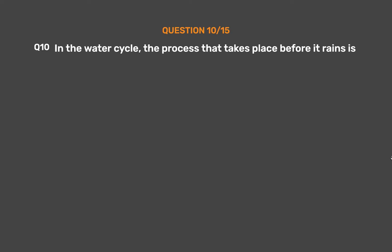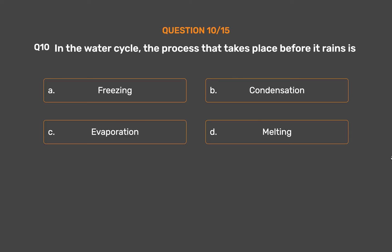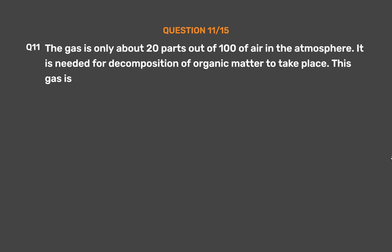Question number ten: In the water cycle, the process that takes place before it rains is — option A: freezing, option B: condensation, option C: evaporation, option D: melting. The correct answer is option B: condensation.